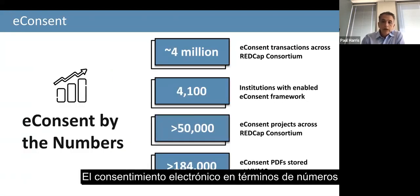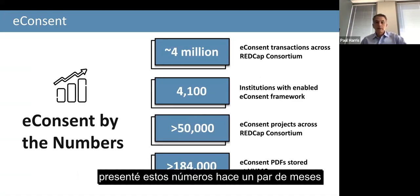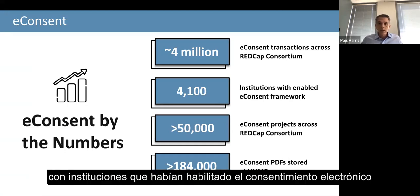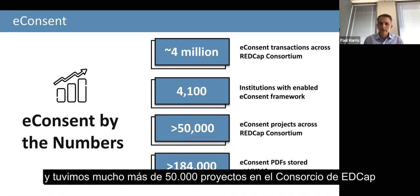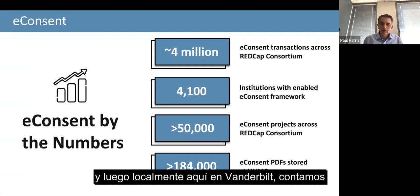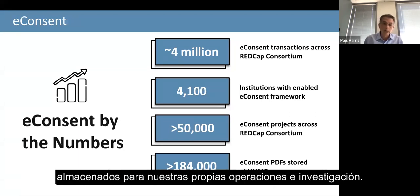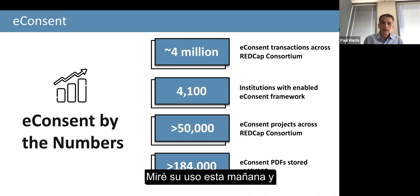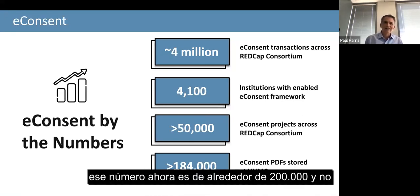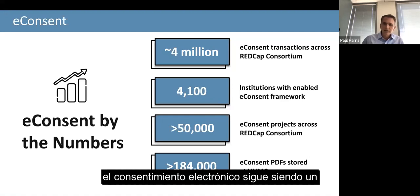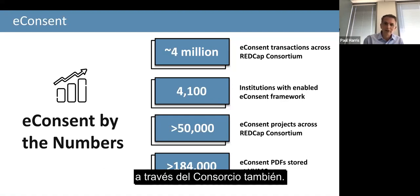E-consent by the numbers: at least when I presented these numbers a couple of months ago, we had more than 4 million transactions across the REDCap consortium. Institutions had enabled the e-consent framework, and we had more than 50,000 projects across the consortium. Locally here at Vanderbilt, we counted over 184,000 e-consent transactions stored for our own research operations. I looked this morning and that number is about 200,000. E-consent continues to be a huge asset to us here at Vanderbilt and through the consortium as well.